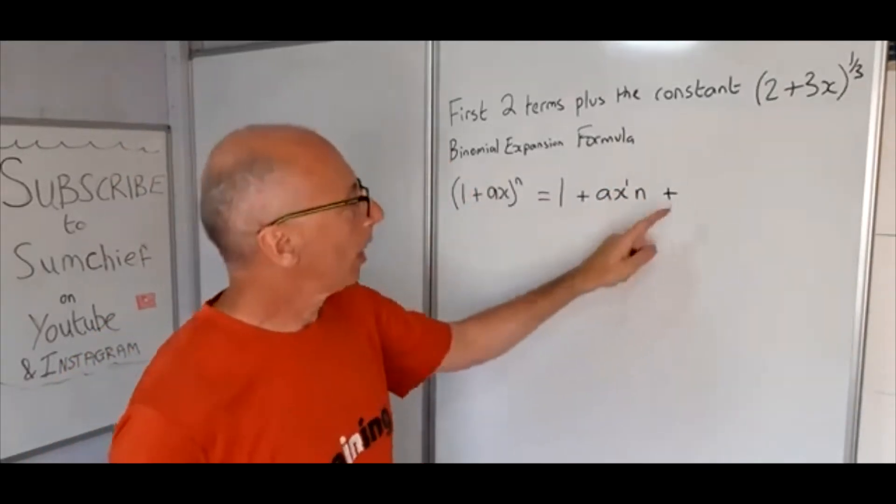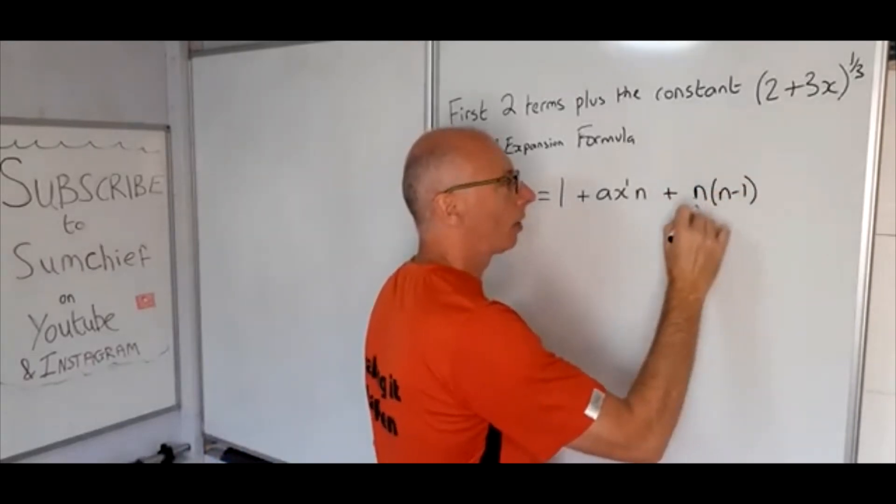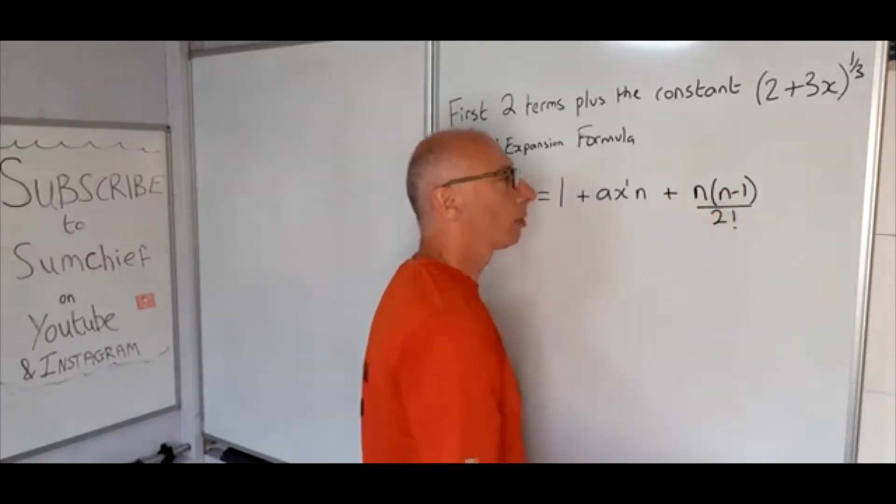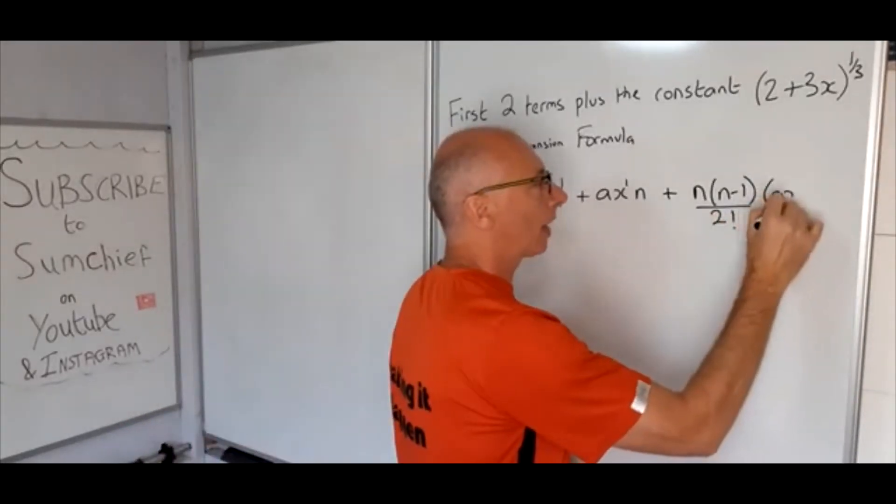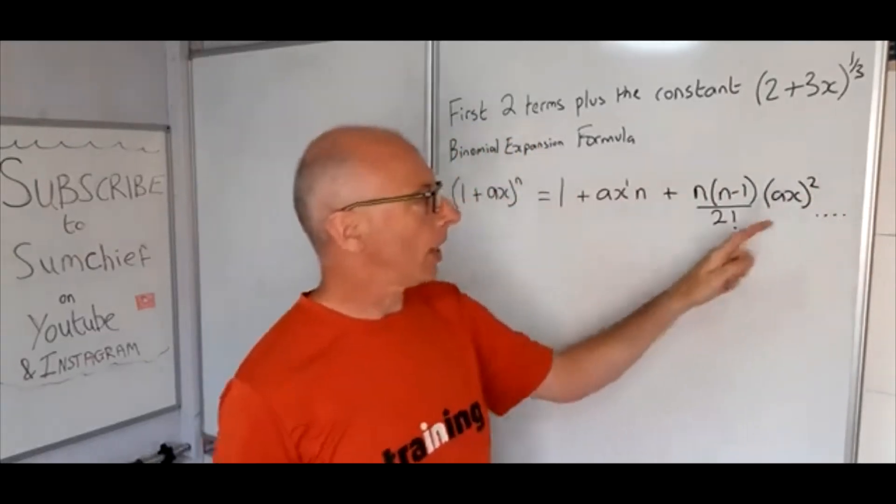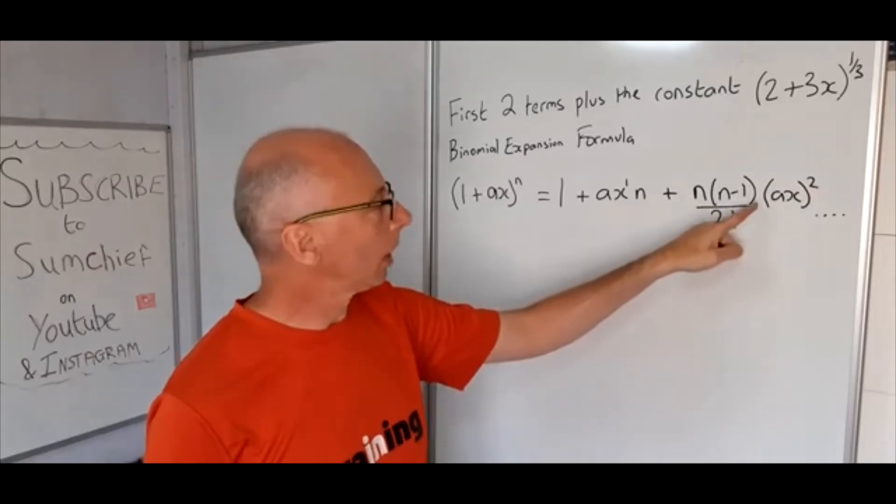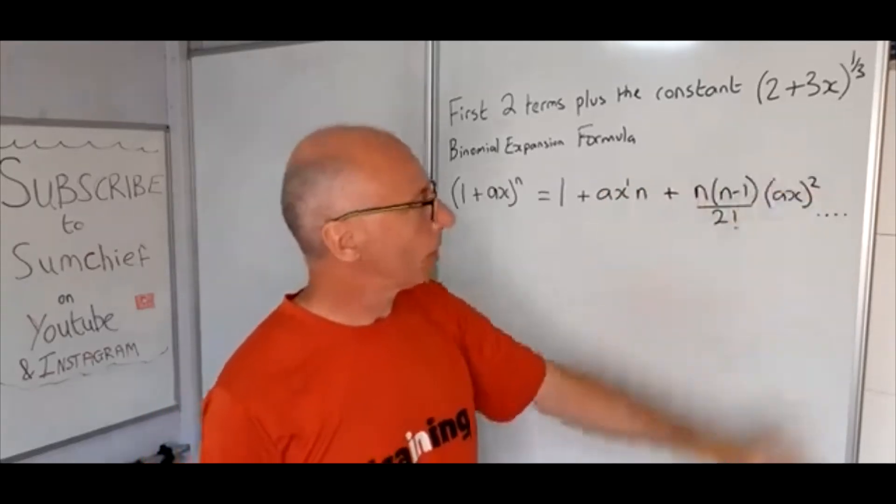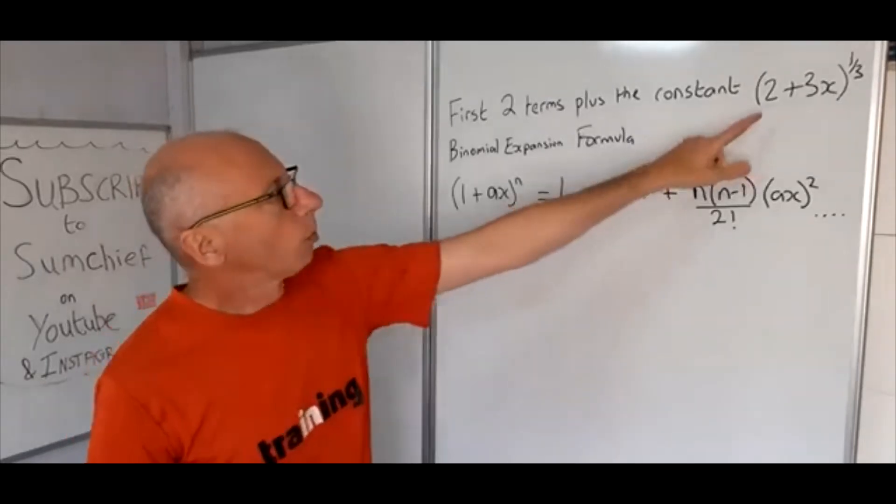And then the next one, we go n times (n - 1) over 2 factorial and then we multiply this by (ax)^2, and you can keep going on like this: 3 factorial to the power of 3, n minus 2 will be included in the next one, and so on.